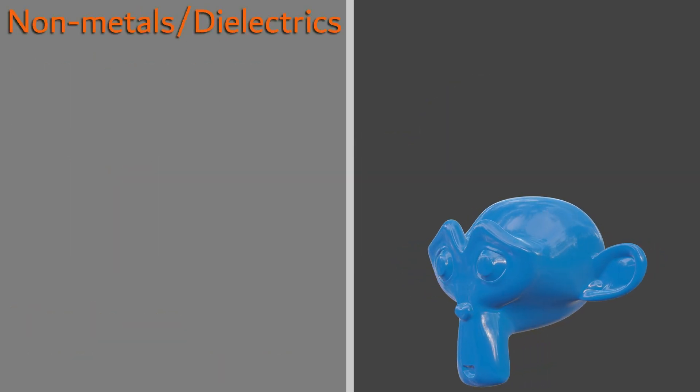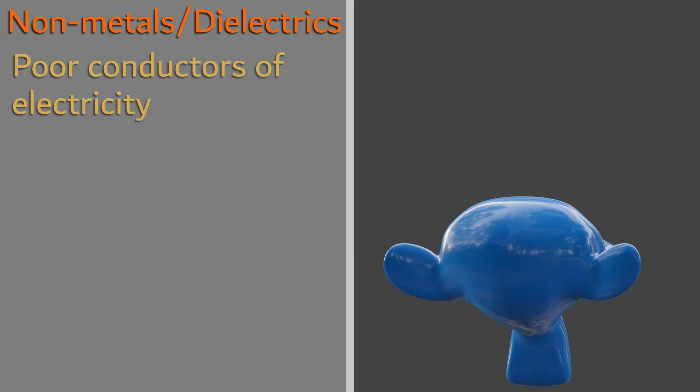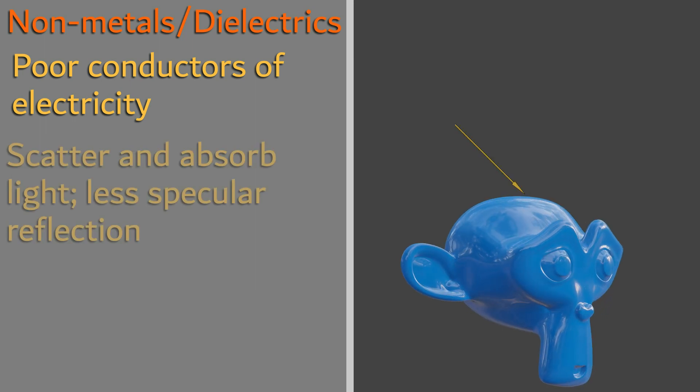Non-metals are often referred to as insulators or dielectrics, and are poor conductors of electricity. They tend to scatter and absorb light.